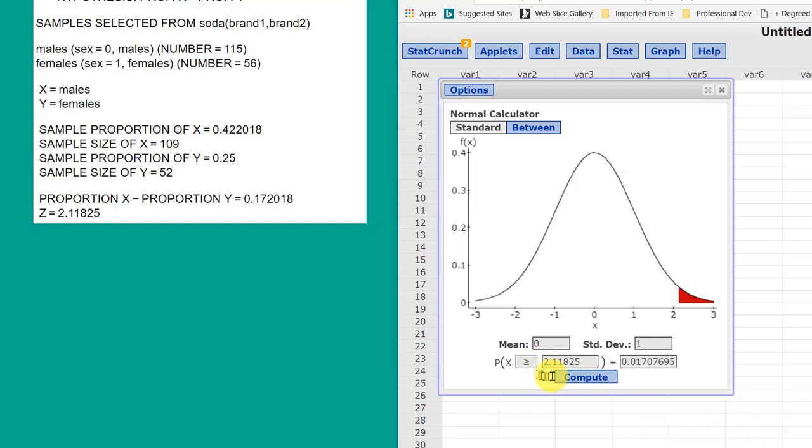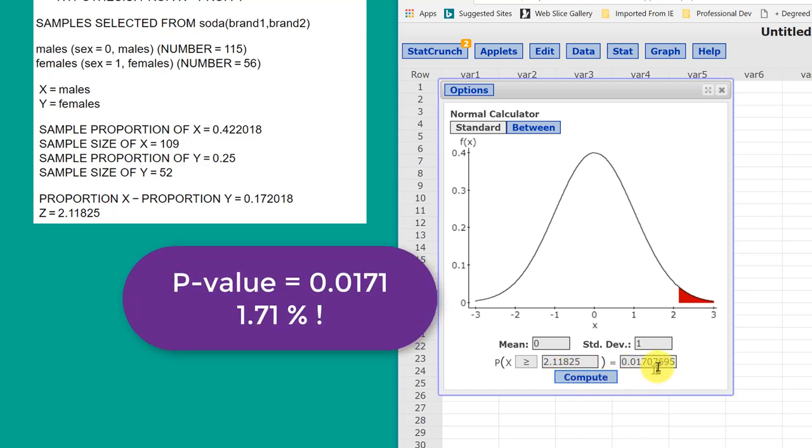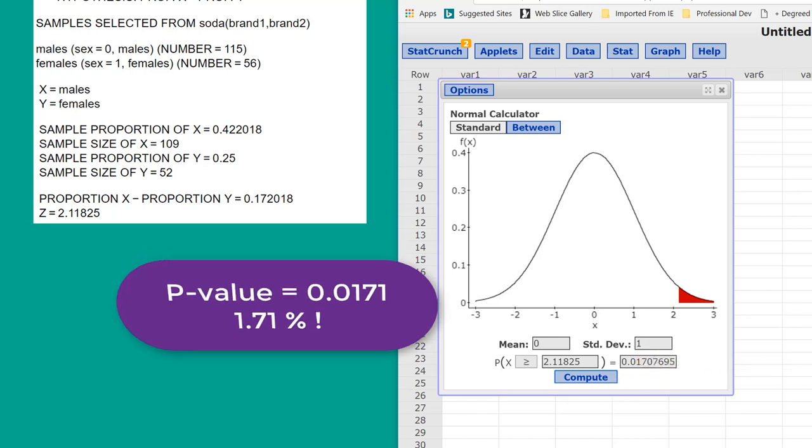We get our answer. The probability of having a Z value greater than 2.11825 is 0.0171. Pretty small, but that's all you have to do to get this answer. Hope this helps.